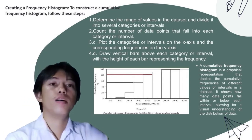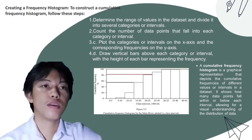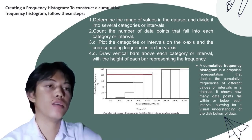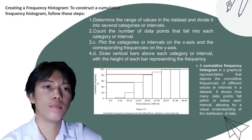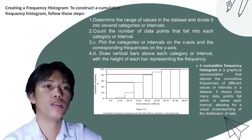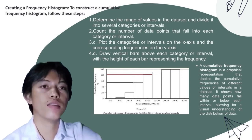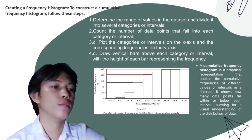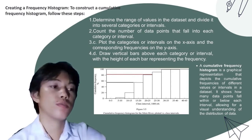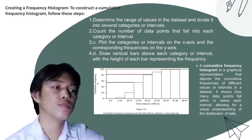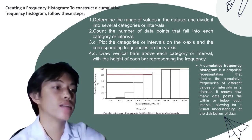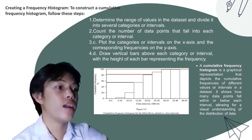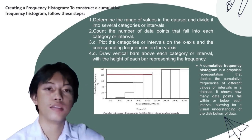The cumulative frequency histogram is a graphical representation depicting the cumulative frequencies of different values or intervals in a data set, showing how many data points fall within or below each interval. Its purpose is to provide insight into the distribution and spread of data, highlight concentration of data within certain intervals, identify outliers, and illustrate the overall shape of the data set.